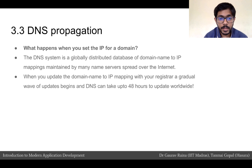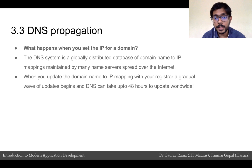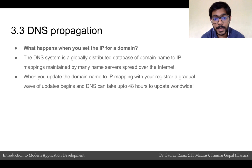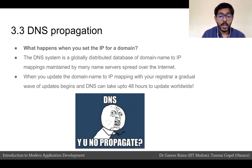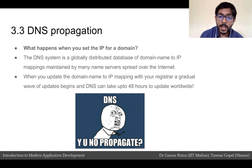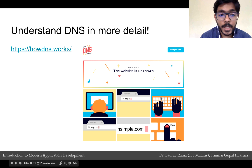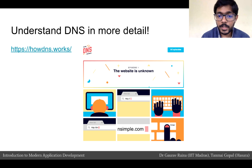Once you link the domain name to an IP, DNS has to update throughout the world. The DNS system is a set of globally distributed databases that contain domain name to IP mappings, maintained by many name servers spread over the internet. When you update the domain name to IP mapping with your registrar, a gradual wave of updates begins and DNS updates are propagated throughout the world. DNS can sometimes take 48 hours to update worldwide, which is why you might not be able to access your server with the domain name for up to 4 or 5 hours. To understand how DNS works in more detail, check out howdns.works — a lovely resource to understand how your browser finally gets the IP of the web app you're trying to reach.